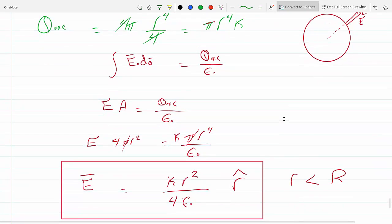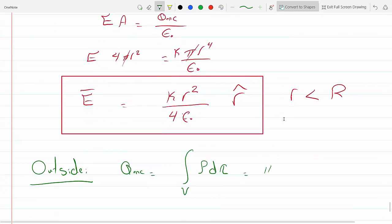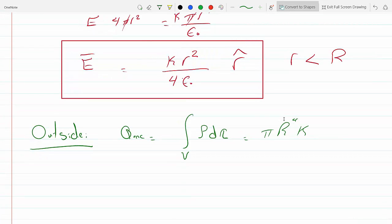So I will get π R⁴ times K. And now Gauss's law will be the same, so E times 4π r². So if this is my sphere, this is R, and my Gaussian surface would be here, and this would be my r, and this would be big R here.